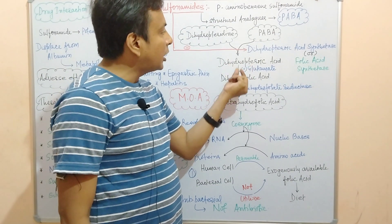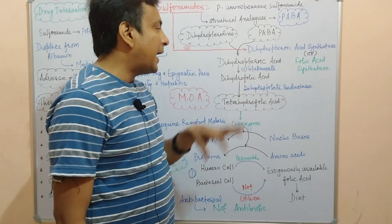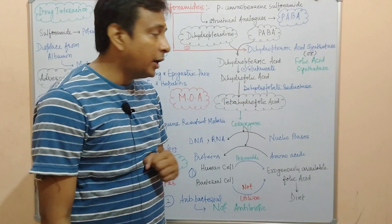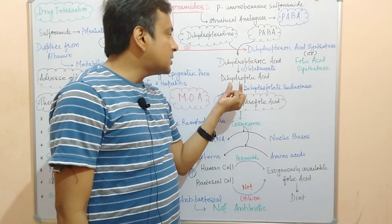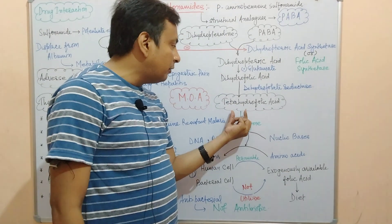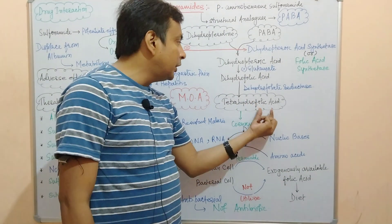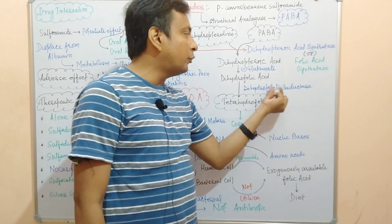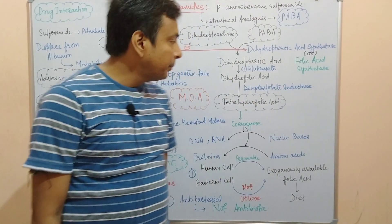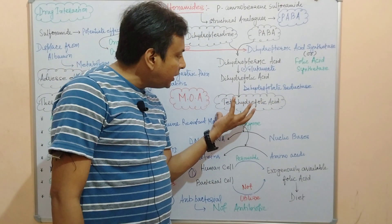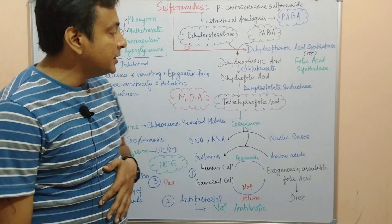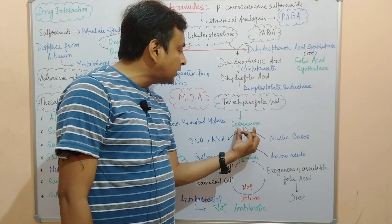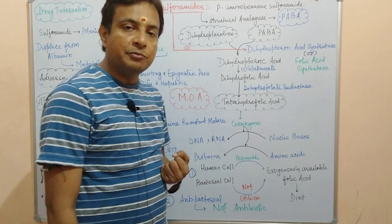When this dihydropteroic acid is added to glutamate, it results in dihydrofolic acid synthesis. This dihydrofolic acid is then converted into tetrahydrofolic acid in the presence of an enzyme known as dihydrofolate reductase. In this enzyme's presence, tetrahydrofolic acid is synthesized.